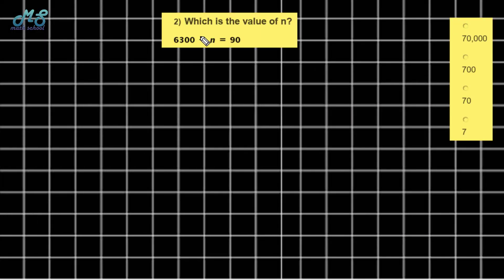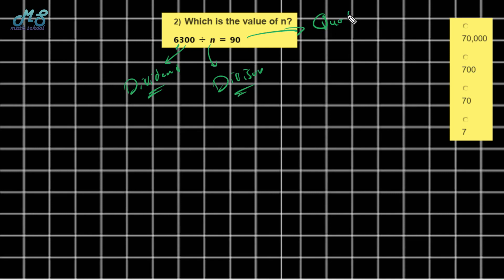Next exercise — the same idea: find the value of n. 6,300 divided by n is equal to 90. The first number is called the dividend, the second is the divisor, and 90 is called the quotient. Which number is missing? The divisor is missing. To find the divisor, just divide the dividend by the quotient.